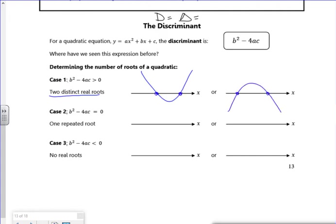Then if I've got one repeated root, that's where I just get one value out and it just touches, whether it's a u-shape or an n-shape there, so it just touches.